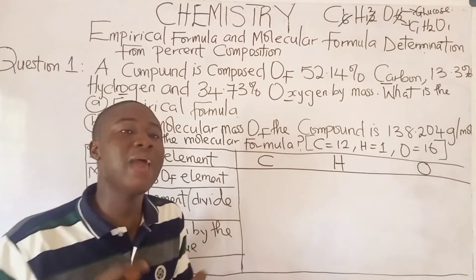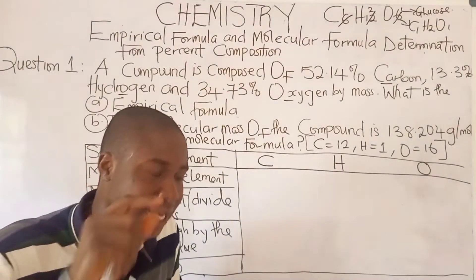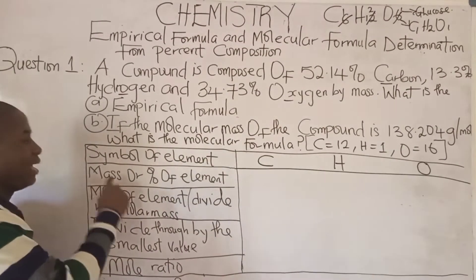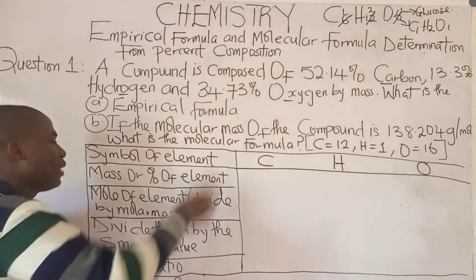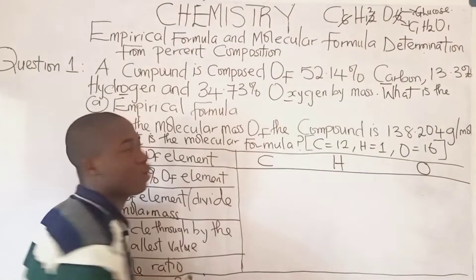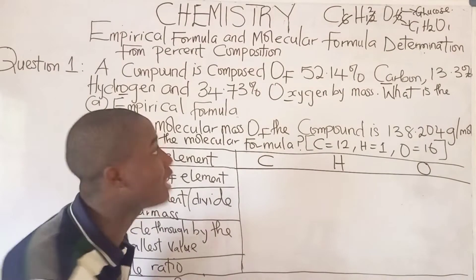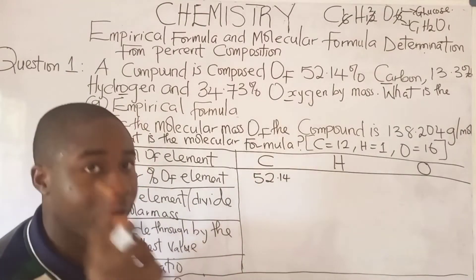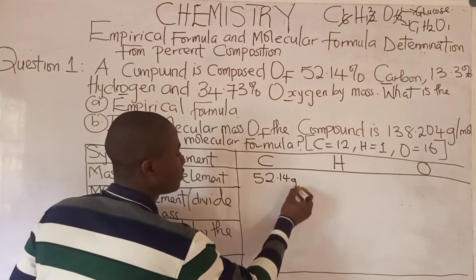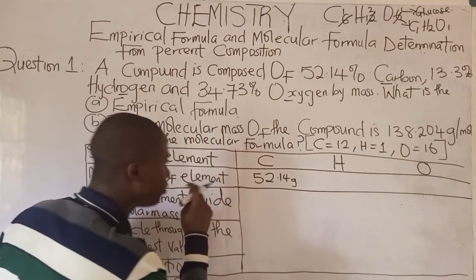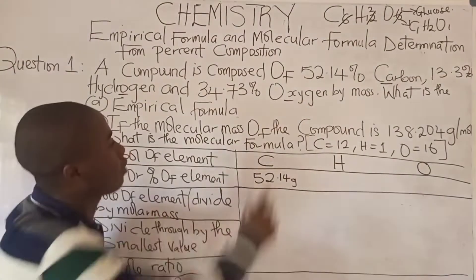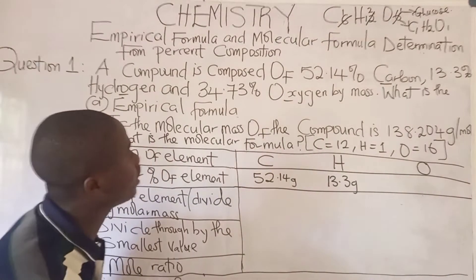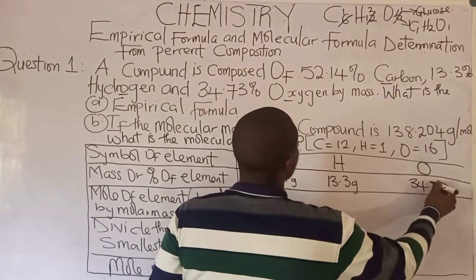It must be noted that in chemistry, percentage is taken to be mass — percentage can be the same as mass. Here it talks about the mass or percent of each element. The percentage of carbon, according to the question, is 52.14%, or 52.14 grams. The percent composition of hydrogen is 13.3 grams. The percentage composition of oxygen is 34.73 grams.